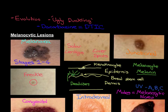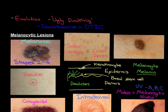Let me explain the ugly duckling rule in more detail. Let's say you have many moles — a bunch of melanocytic nevi. If you go and see a dermatologist about one of them, the dermatologist will compare it to your other hyperpigmented lesions. If it looks exactly the same as the other moles you have, then it is not the ugly duckling and you can be fairly confident that it is not a melanoma. Whereas if it looks very different — if it's the ugly duckling compared to the others — that is a red flag that says this lesion should be biopsied.